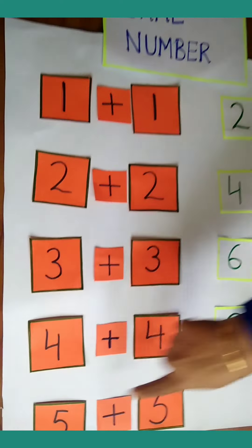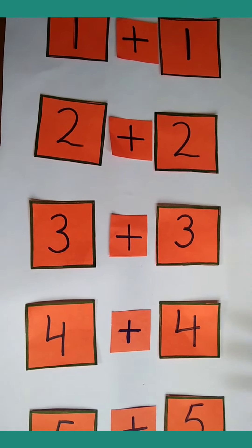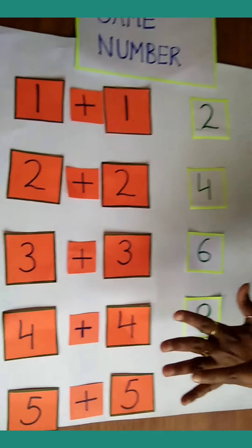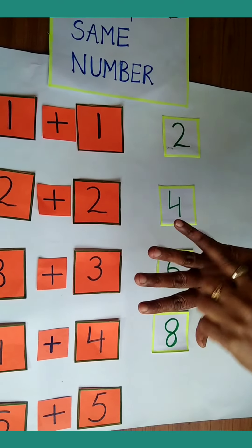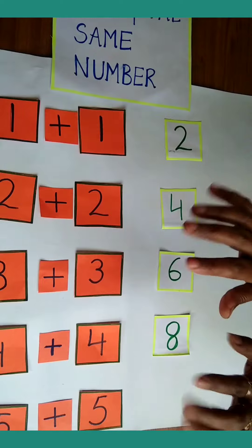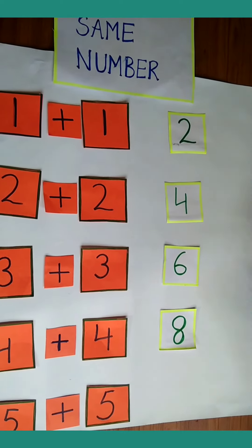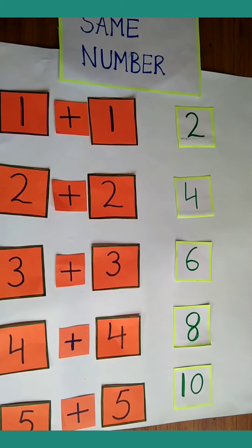This is the number 5, and this is 5. 1, 2, 3, 4, 5. Add 5 more: 1, 2, 3, 4, 5. How many fingers? 10. The answer is 10. Thank you.